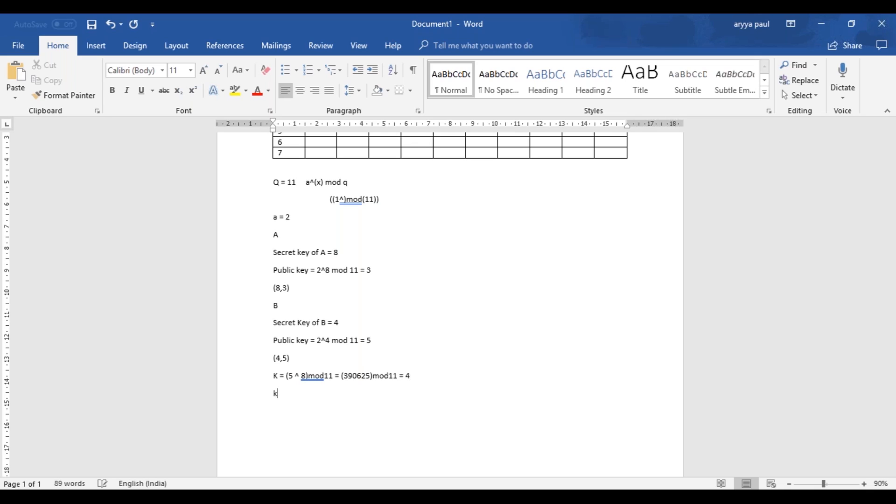Now we also have to do the same thing with B's information. That is the public key of A, which is 3, 3 raised to 4 and mod 11. 3 raised to 4 is 81. 81 divided by 11 gives, 81 minus 77 is 4. As we just proved that K equals K, which is 4 equals 4. So we have successfully generated the Diffie Hellman key for these two users.